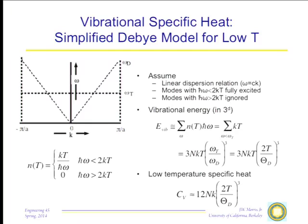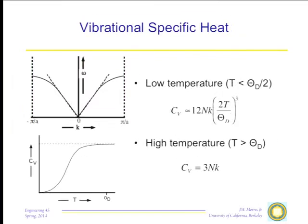Calculating the vibrational energy means summing over all frequencies with ω < ω_T, accounting for three dimensions. The fraction of modes activated is (ω_T/ω_Debye)³. This gives a vibrational energy of 3NkT · (2T/θ_Debye)³, and a specific heat of 12Nk · (2T/θ_Debye)³. This result is very close to the value that comes out of the full Debye model and very close to the actual measured specific heat.